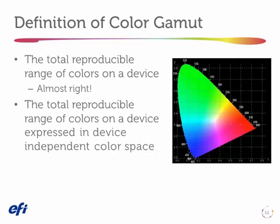Before we go on and talk about color management, let's have a basic definition of color gamut. The device gamut is the total range of colors on a device — the total range of colors that maybe your camera can see, or more importantly, that your output device can produce. You're almost right with that definition, but the problem is you have not talked about device dependent or independent space.